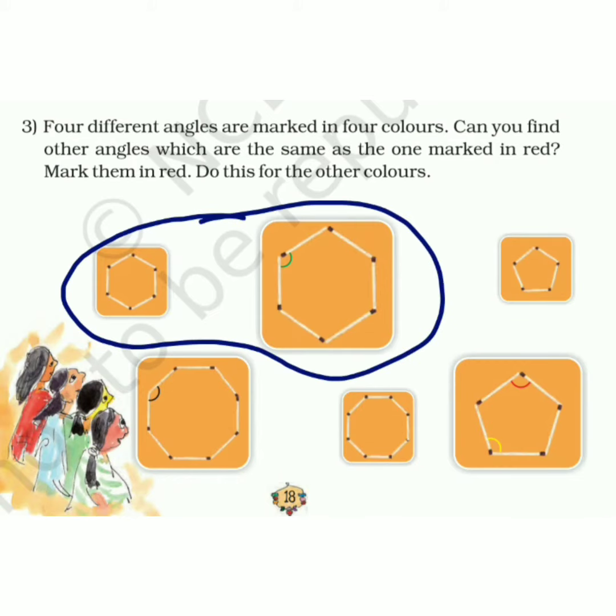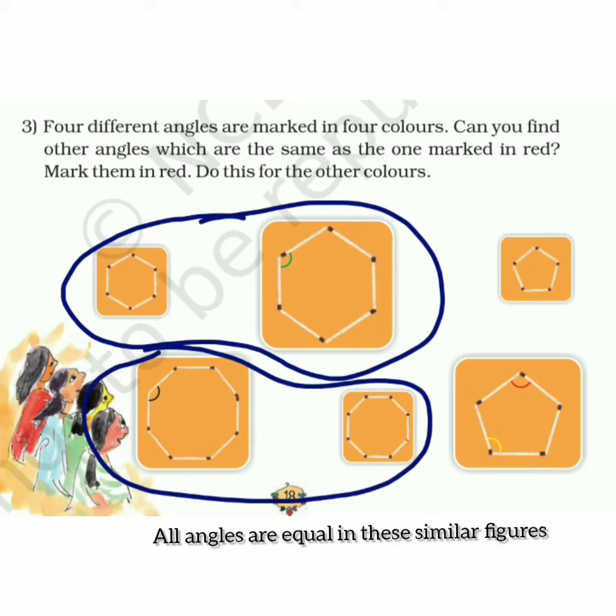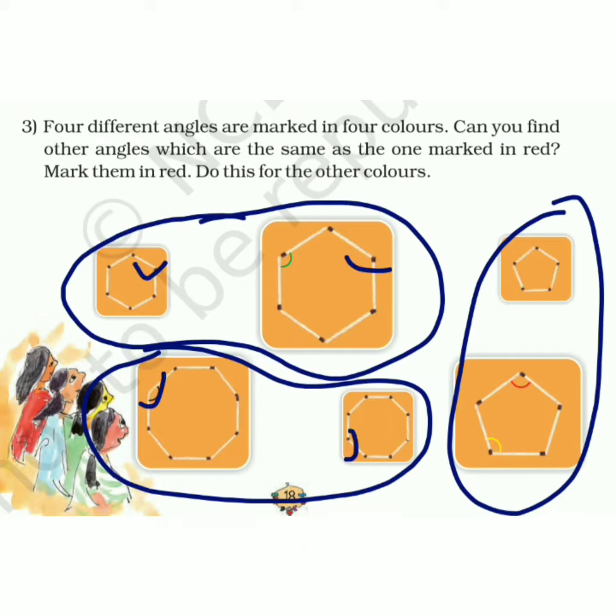They are similar, and they are similar means—they are hexagon and they are octagon and they are pentagon, so all angles are equal. This angle is equal to this angle, this angle is equal to this angle, any angle, because they are similar.